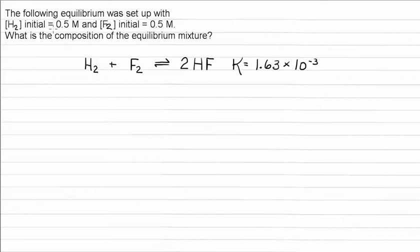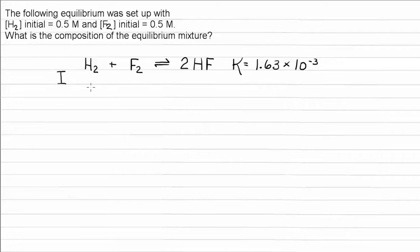The initial concentration of hydrogen is 0.5 molar, and the initial concentration of fluorine is also 0.5 molar. We have no products. So that means for this equilibrium it is going to shift to the right, because we have no products and we know we have to make some products. In our ICE table, 'I' stands for initial concentrations: hydrogen is 0.5 molar, fluorine is 0.5 molar, and initially we have no HF.